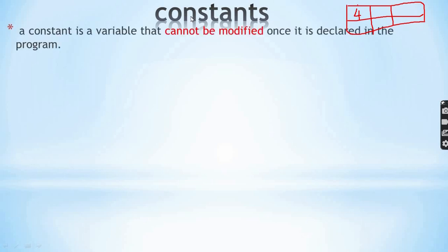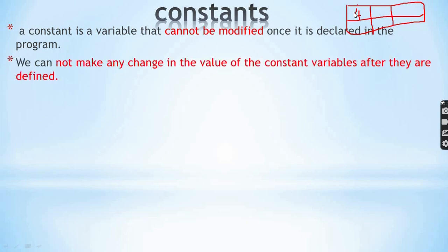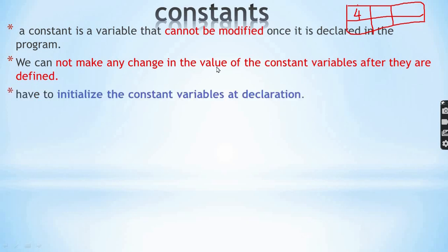A constant is a variable that cannot be modified or changed once it is declared in a program. Under memory space, we cannot make any change in the value of a constant variable after they are defined. When a variable is declared as constant, its value cannot be changed.